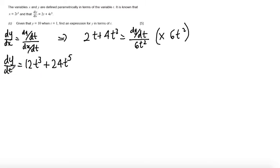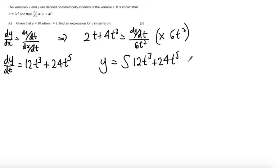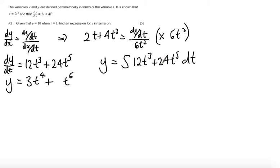Now that we know dy/dt, we can find y by integrating: y equals the integral of 12t cubed plus 24t to the power of 5 with respect to t. Integrating t cubed raises the power to t to the 4, and 12 divided by 4 gives 3. Integrating t to the 5 raises the power to t to the 6, and 24 divided by 6 gives 4. So y equals 3t to the power of 4 plus 4t to the power of 6, plus a constant of integration.